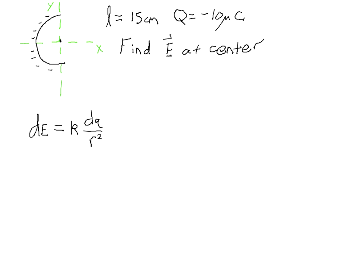First, let's consider the direction of the electric field. We're looking for the electric field at the center point. For the electric field in the y-direction, due to symmetry it's going to be zero. Because we have the same amount of negative charge above the x-axis as we have below it. So any upward or downward electric field contributions will cancel. The y-component of the electric field at the center point is equal to zero.